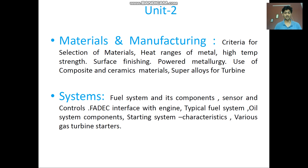Surface finishing — why it is required for components of gas turbine engines and how it affects the performance of a particular component — is also discussed. Then powder metallurgy techniques and which components can be fabricated using this method are covered. The use of composite materials and ceramics in gas turbine engines is discussed, and finally, the super alloys used for gas turbine engine turbines — how they are fabricated and why they are required based on their properties — are also discussed.